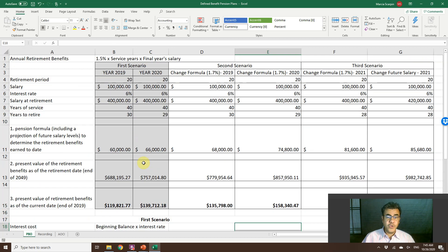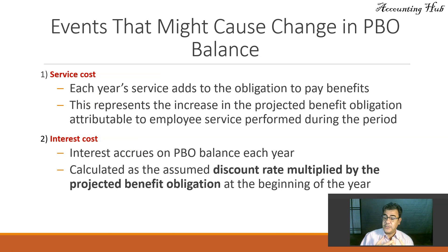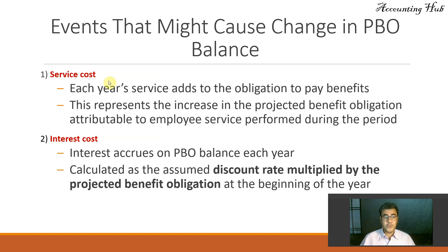Let's go back to our PowerPoint. Service cost: each year, each year of service adds to the obligation to pay benefits. Cristiano Ronaldo works one more year, so his pension formula increases because his service years go from 10 to 11 — he will receive more money and all present values increase. That is the service cost. Interest cost is the interest that accrues on the PBO balance each year, calculated as the assumed discount rate multiplied by the beginning balance of the projected benefit obligation.